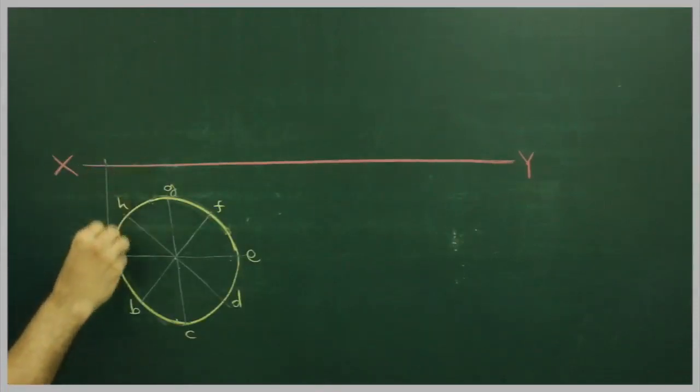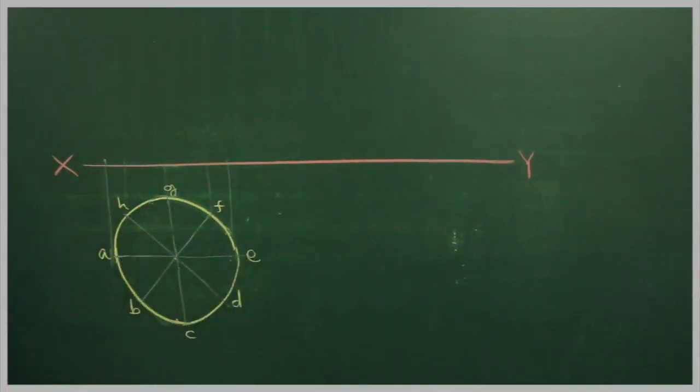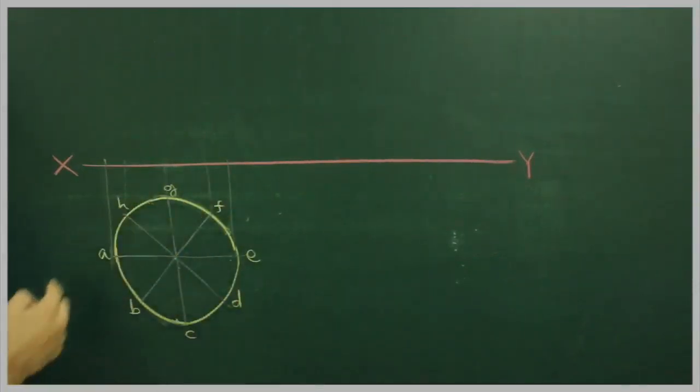Now see why I am dividing a circle into 8 parts - because I do not have any edges, any points. Like in pentagon I have 5 points, in hexagon I have 6 points. In circle I do not have any points, so that is why I have divided into 8 parts to get all these imaginary points.